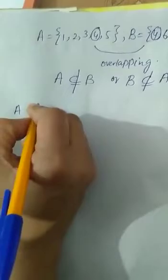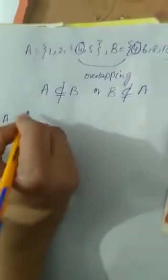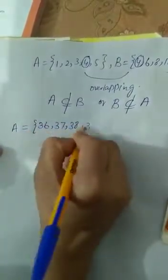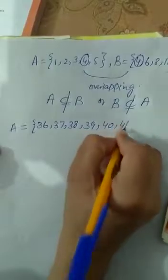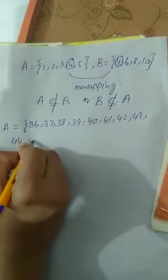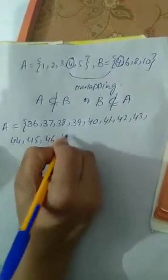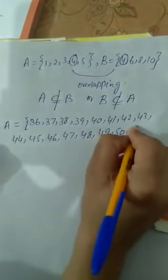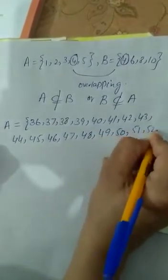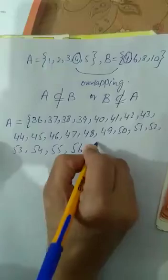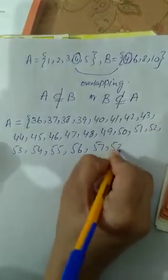A is equal to natural numbers between 35 and 60, that is 36, 37, 38, 39, 40, 41, 42, 43, 44, 45, 46, 47, 48, 49, and 50, 51, 52, 53, 54, 55, 56, 57, 58, 59.